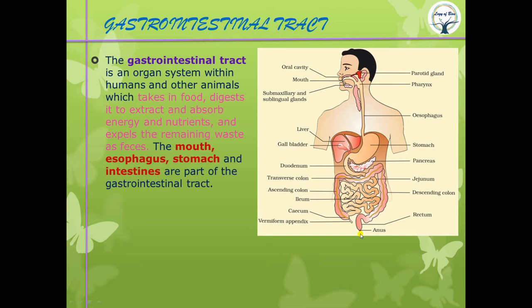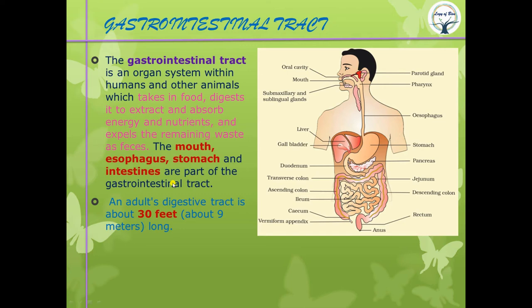The function of the GI tract is to intake food, digest it, absorb it, and finally eject it through the anus. Note: ejection is for feces, but excretion is for urine. The GI tract includes the mouth, esophagus, stomach, intestines, and anus, and is on average 9 meters long.